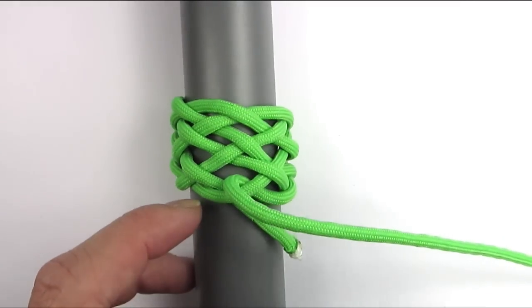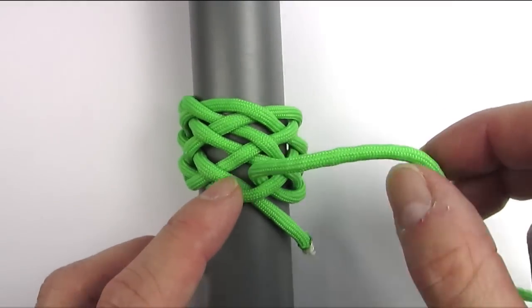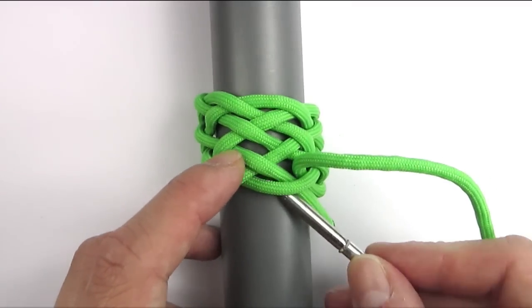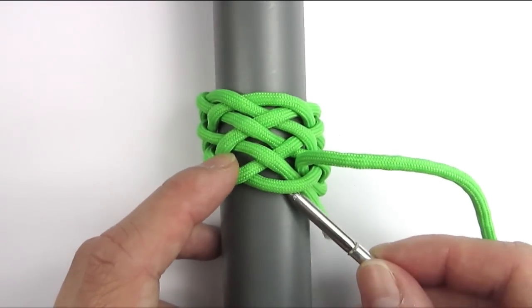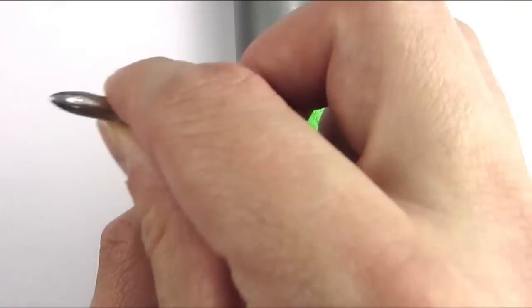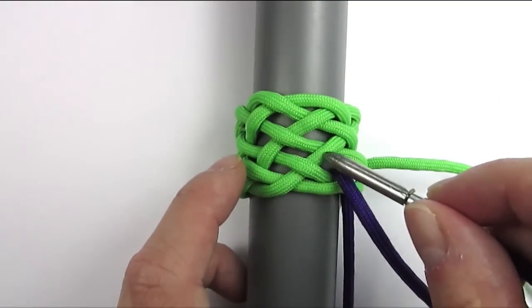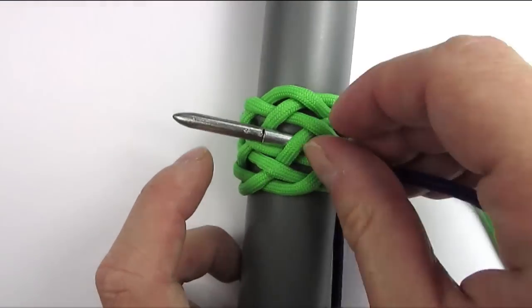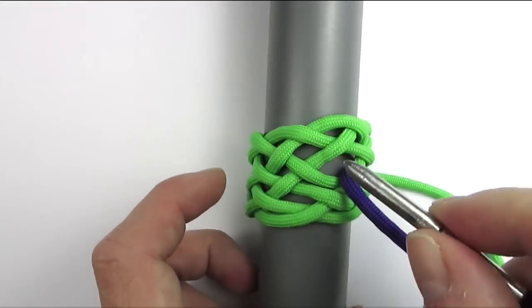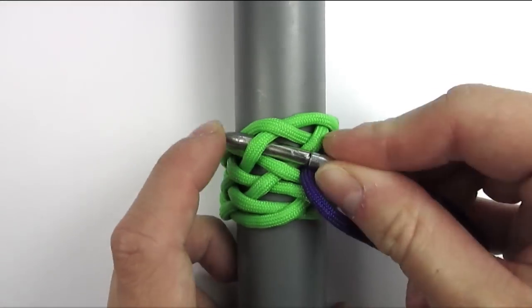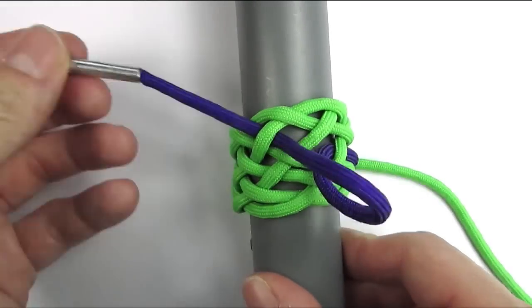We're going to start on the left side of our standing end and we're going to go under 2, over 1, under 1, over 1 and under 1. As you can see we did not pass the top bight.